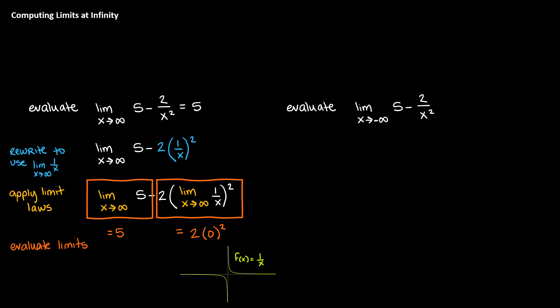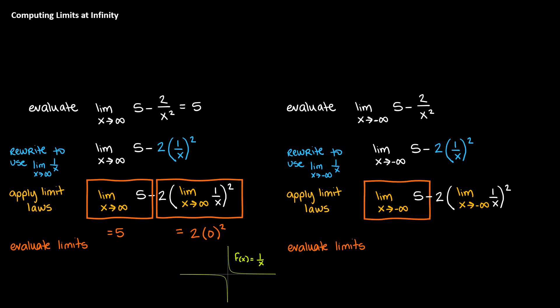What about if we were traveling to negative infinity? The process is almost identical. Start by rewriting the term so that we can see 1 over x, apply our limit laws, and then evaluate the limits one at a time. The first limit is still 5 because it's a constant. Our second limit is also going to be 0. Think about our function. As we're traveling towards negative infinity, we're still tending to 0. It was negative before it turned into 0, but that almost doesn't matter. So when we evaluate that limit, it looks like 2 times 0 squared. And then we compute the difference to see that the limit overall is equal to 5.